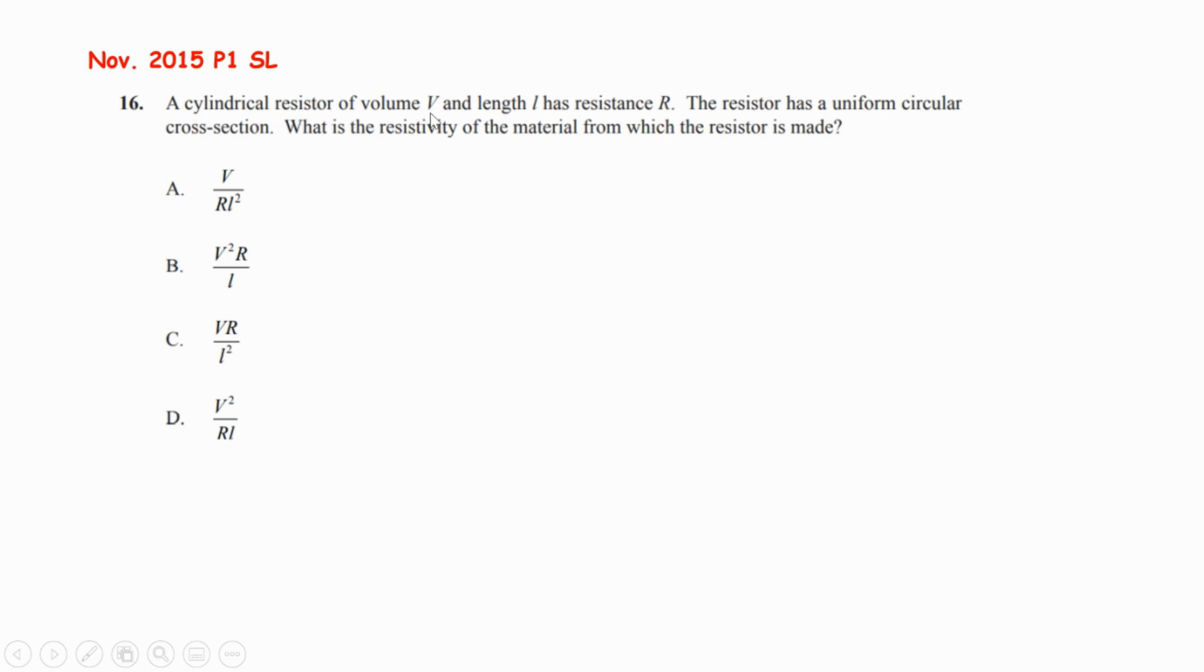A cylindrical resistor of volume V and length L has resistance R. The resistor has a uniform circular cross-section. What is the resistivity of the material from which the resistor is made?